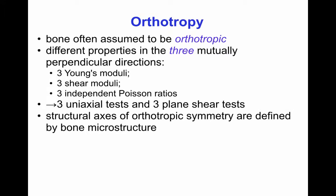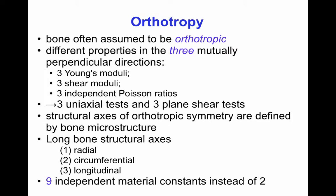The structural axes of orthotropic symmetry are defined by the microstructure. In the case of bone, one axis is the long axis of the bone, one is the circumferential axis, and the third is the radial or transverse axis. The material properties of bone as a linearly elastic solid have been characterized using these tests with nine independent material constants instead of just two.